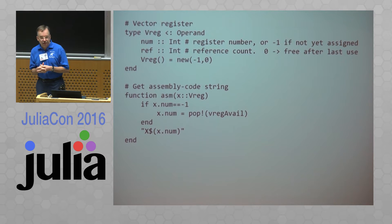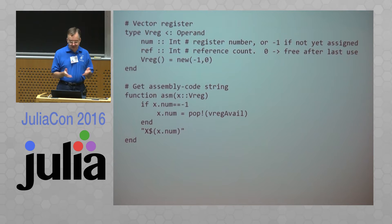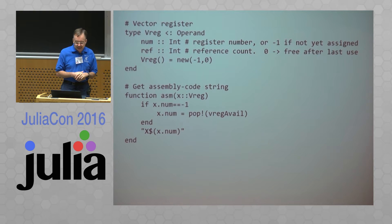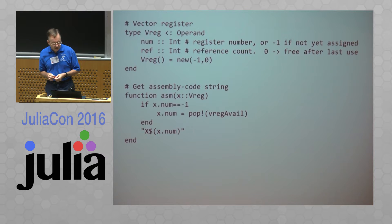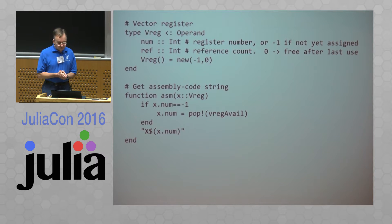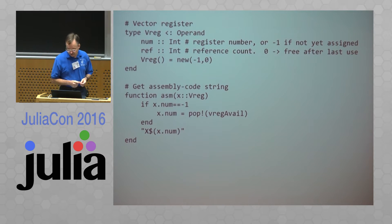Vector registers get trickier because I wanted to allocate them on the fly and have the Julia code keep track of which ones were live. So the vector registers have a register number — if it's not assigned yet, it's just a symbolic operand with minus one as a placeholder — and a reference count of the number of uses. Basically, when that count gets down to zero, the code knows it can free the register. Getting the assembly code string is also overloaded, and if the register hasn't been allocated yet, it grabs one out of the set of available registers.